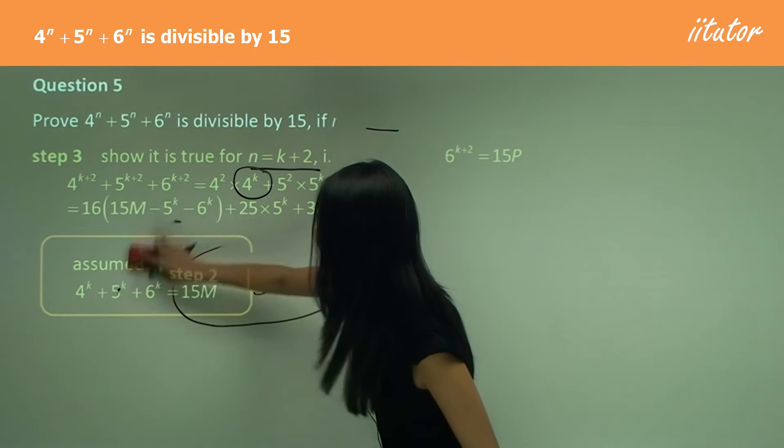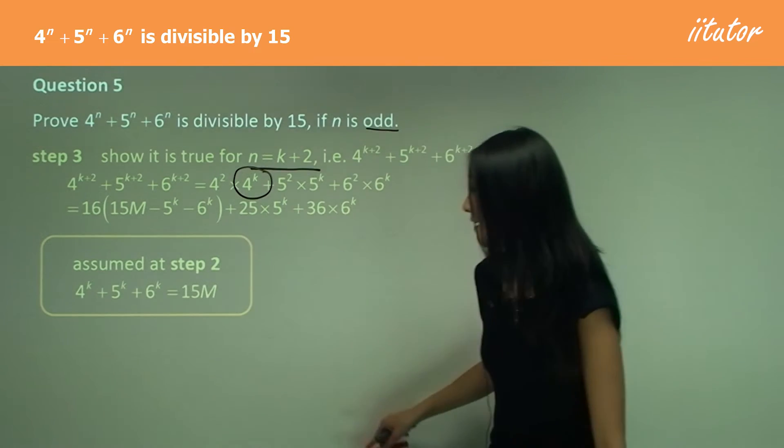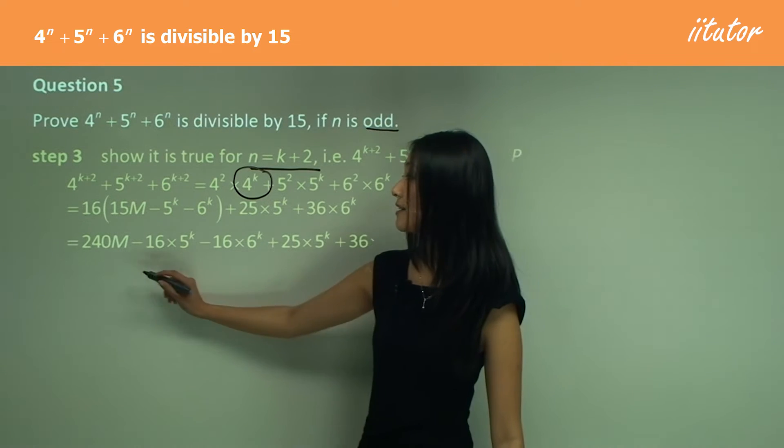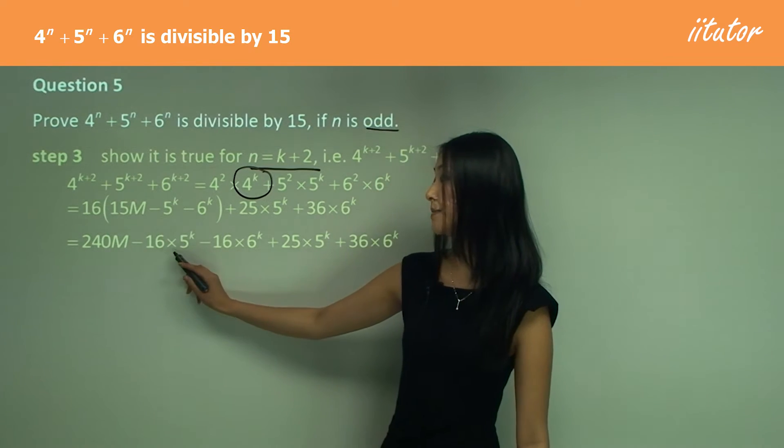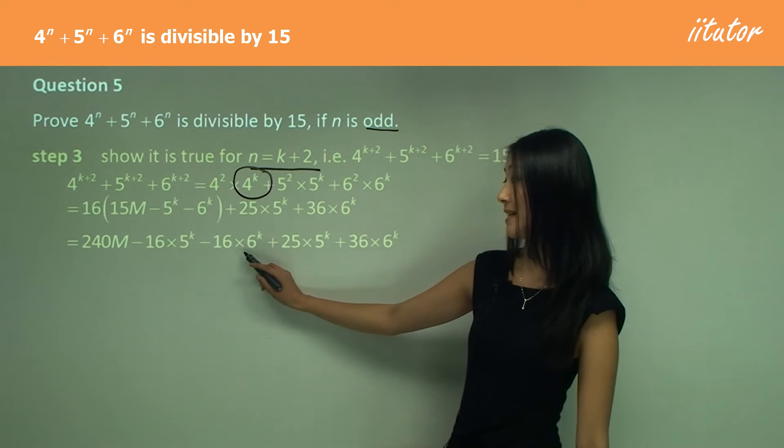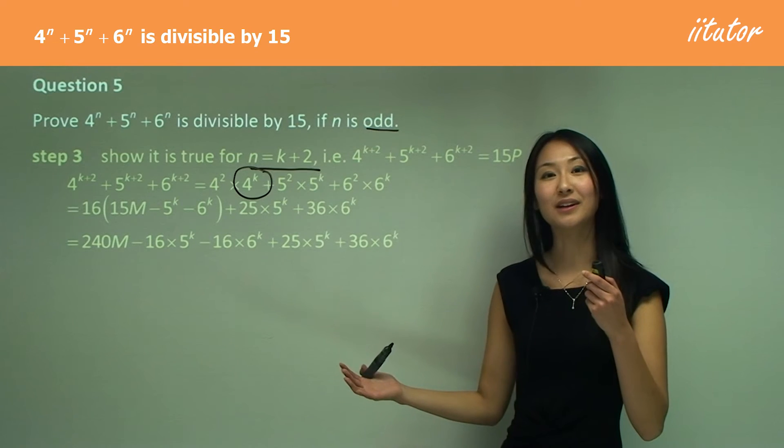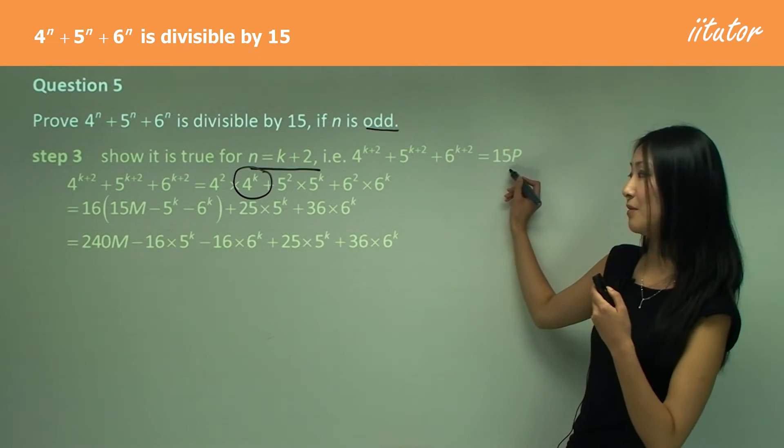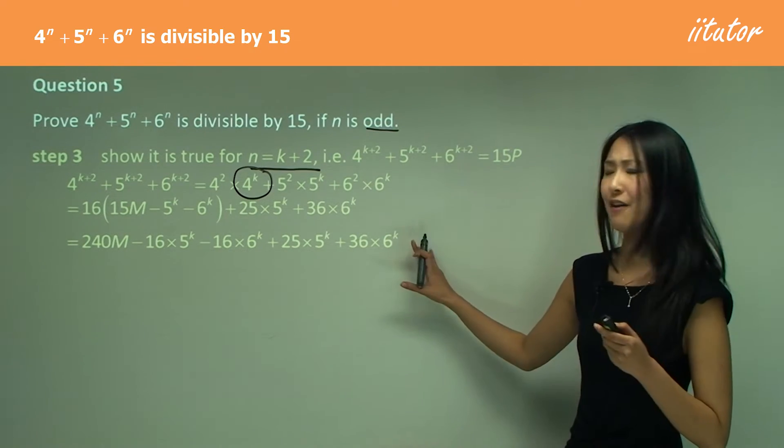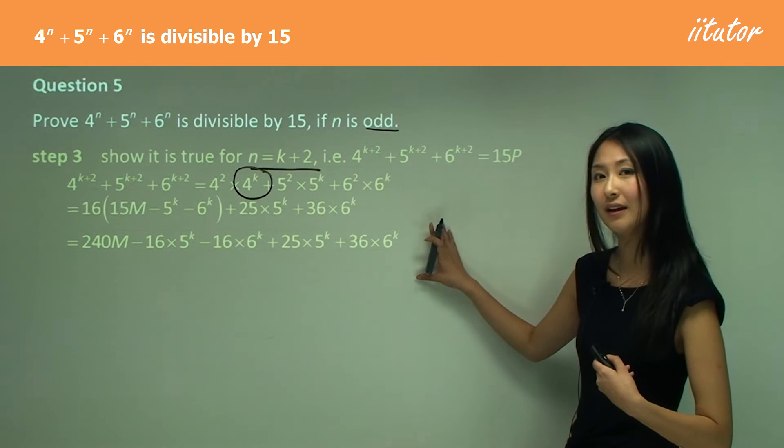We just need to expand that. So it's a simple matter of expanding that factor. 16 times 15 gives us 240. This is 16 times negative 5, 16 times negative 6, and this stays the same. Remember, I want to make it divisible by 15, so I want to factorize out 15. I need to simplify first because right now it's too everywhere.